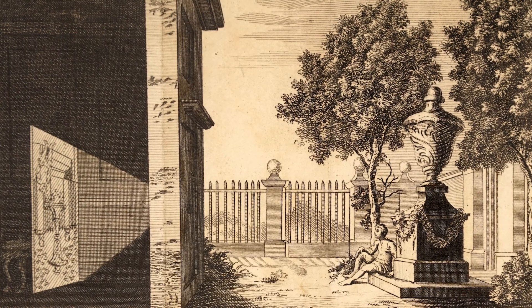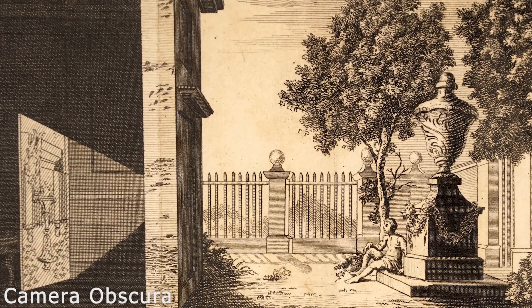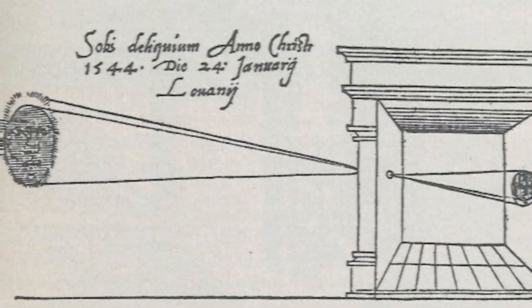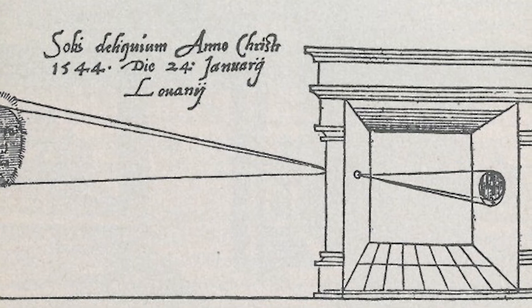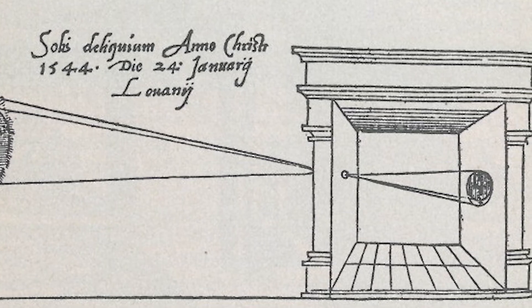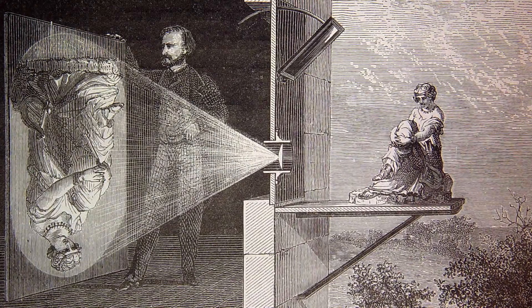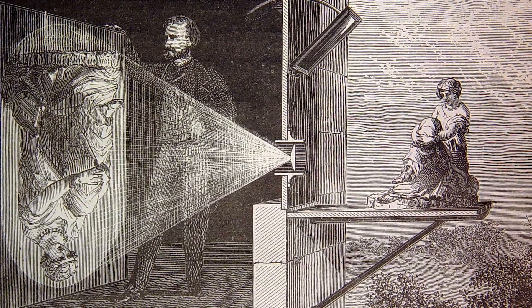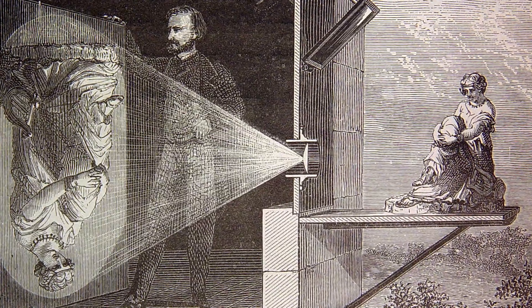Early Image Projection. The earliest known device capable of image projection was called the Camera Obscura, Latin for 'dark chamber.' It was an optical device that served as a precursor to the modern camera. It consisted of a darkened room or box with a small hole on one side. When light passed through the hole, it projected an inverted image of the outside scene onto the opposite wall. This principle was known to ancient scholars like Aristotle, but it gained prominence in the 16th century as artists and scientists, including Leonardo da Vinci, used it for drawing and understanding perspective.